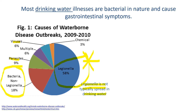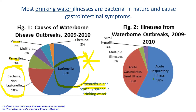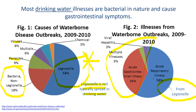Legionella is not typically spread through drinking water like the others — it's spread in water mists. The majority of cases come from hot tubs that aren't cleaned properly or don't have enough chemicals, or from cooling towers and other misting sources. Legionella causes fever and pneumonia-type disease, and it can be quite serious for the very young, very old, or immunocompromised.